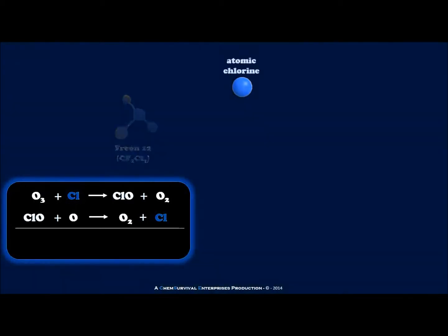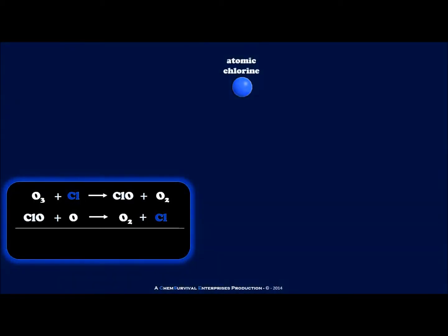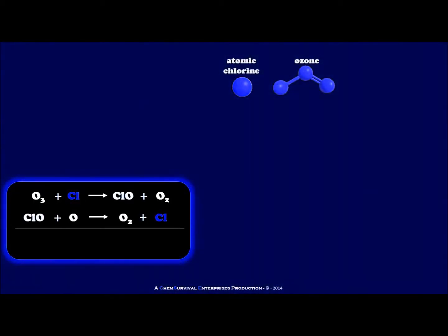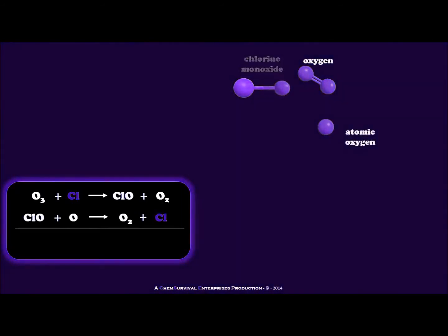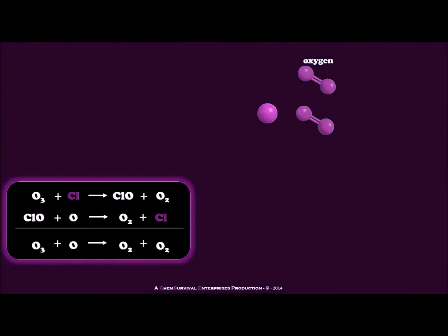First, high-energy ultraviolet rays free chlorine atoms from the CFC molecule. These free chlorine atoms can react with other molecules in the atmosphere. When a chlorine atom reacts with an ozone molecule, it steals one of the ozone molecule's three oxygen atoms, forming a molecule of chlorine monoxide. The remaining two oxygen atoms form an ordinary oxygen molecule. In this way, an ozone molecule is destroyed.